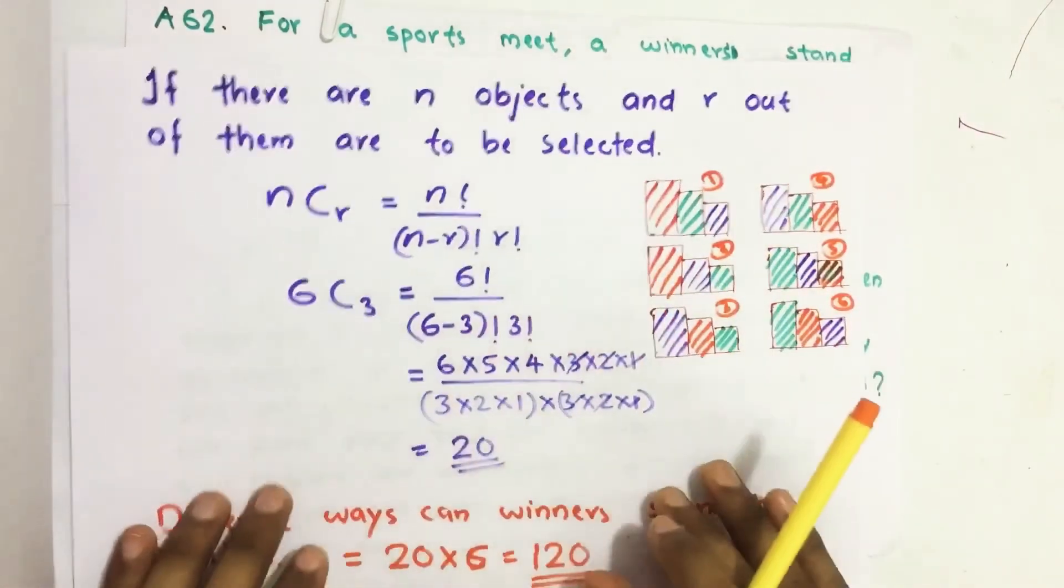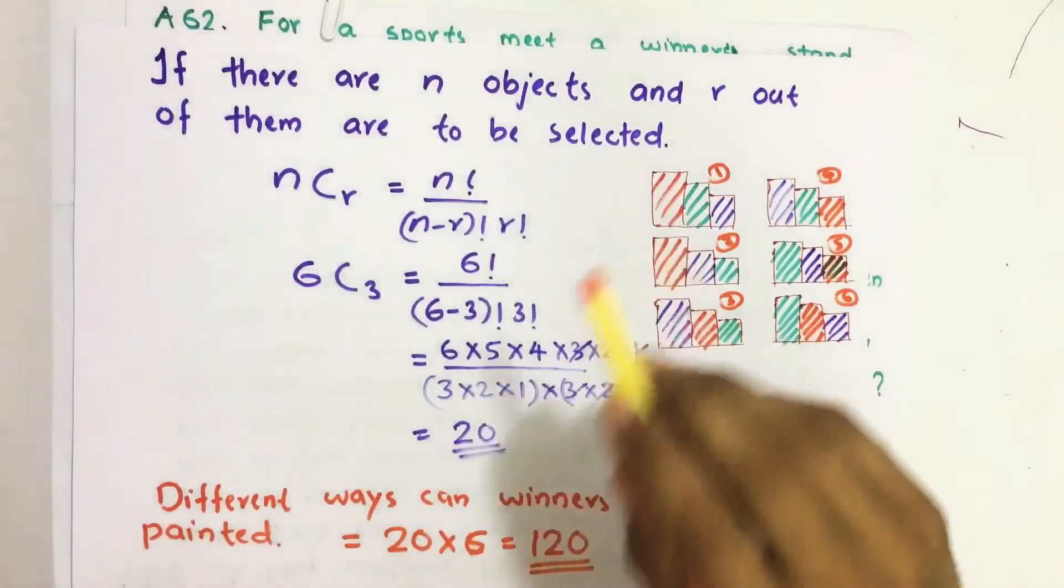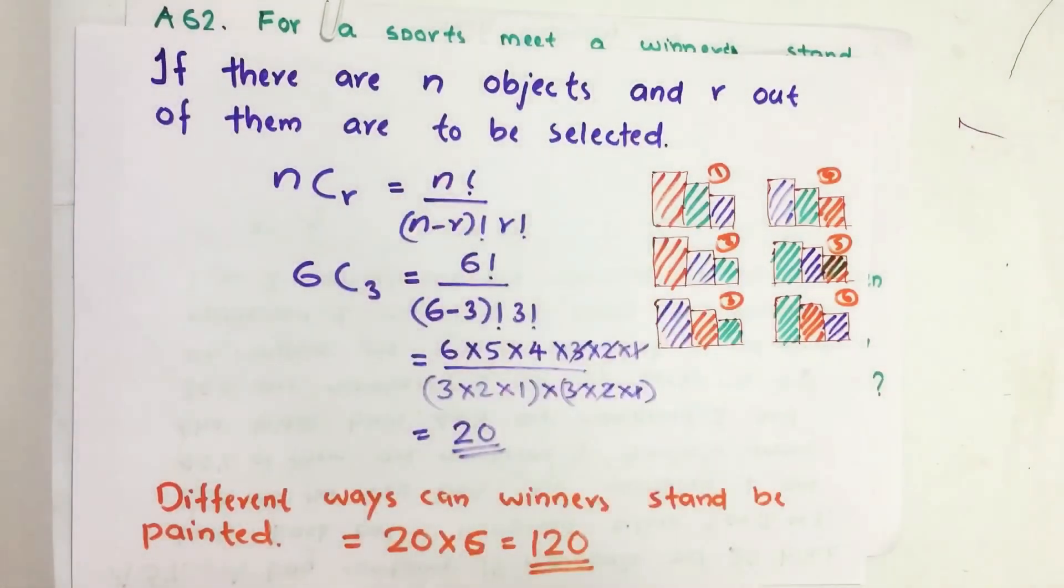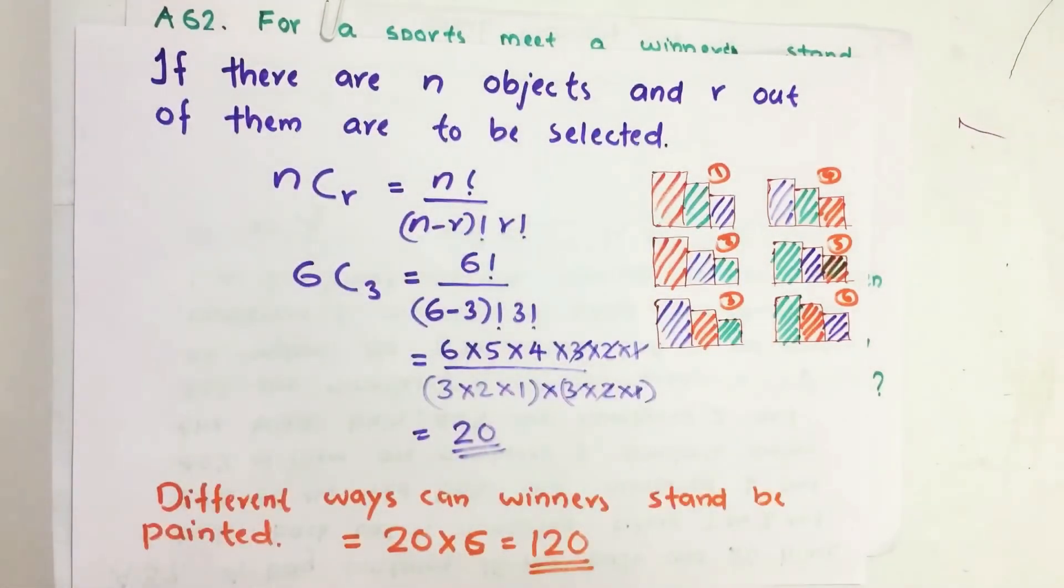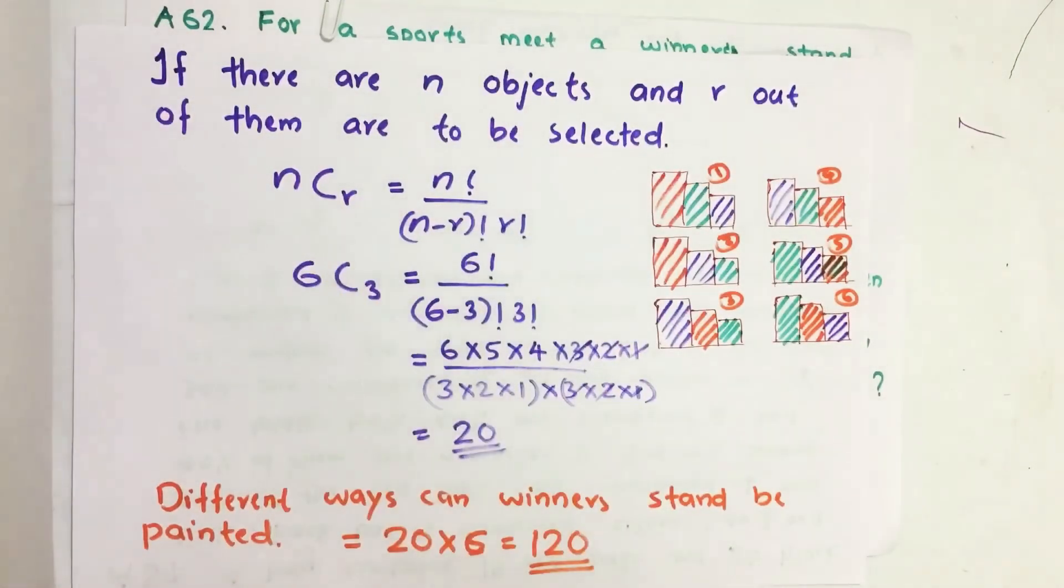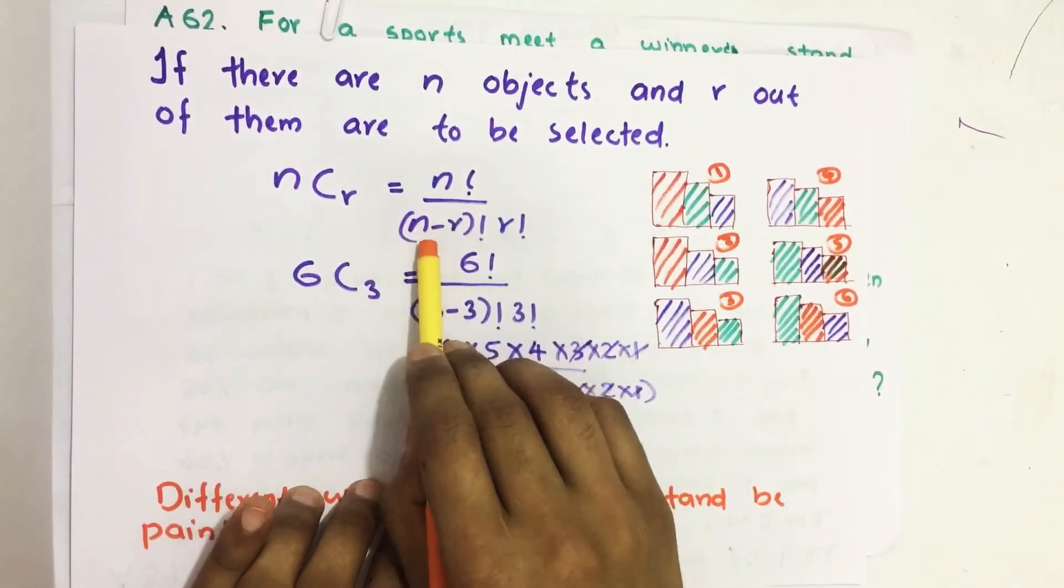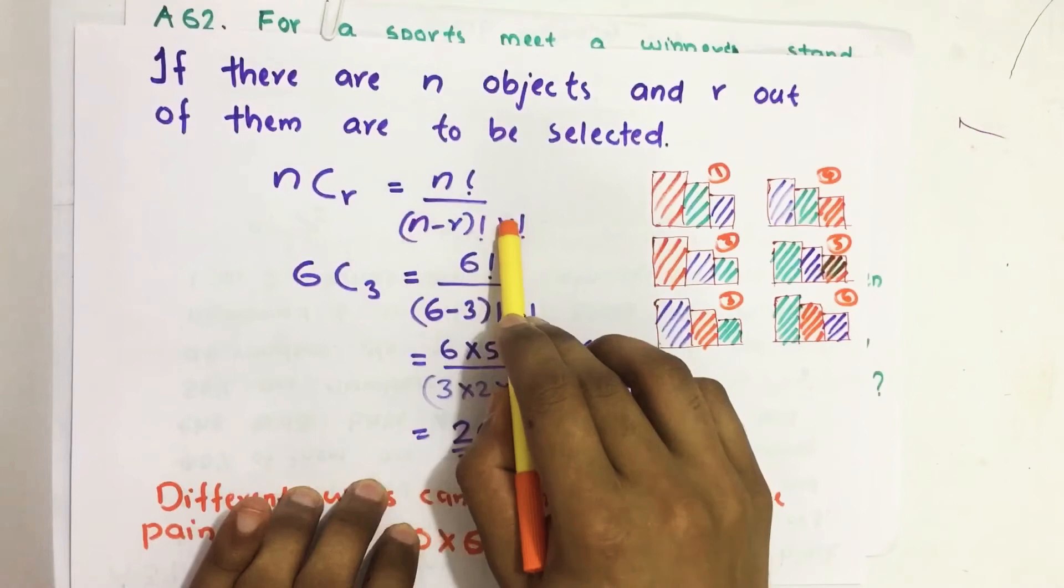Now let us see. If there are n objects and r out of them are to be selected, then different ways we can select this r out of this n object is nCr. nCr means n factorial divided by (n minus r) factorial times r factorial.